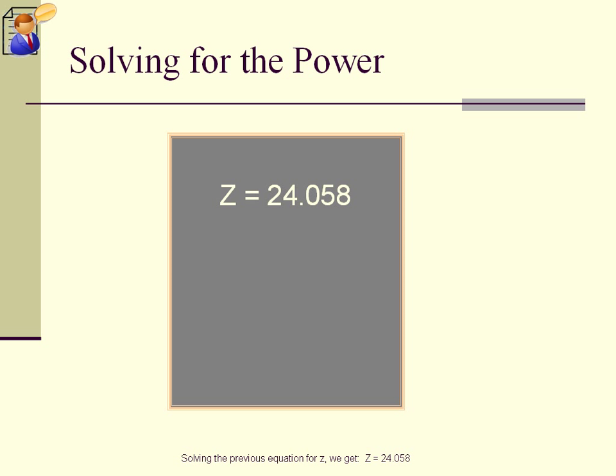Solving the previous equation for Z, we get Z equals 24.058. Recalling the definition of the zip, Z equals P over M, we finally get the equation for the power, P equals MZ. Substituting Usain's mass, 90 kilograms, for M, we get Usain's power to be 2165 watts.